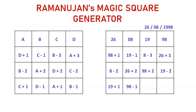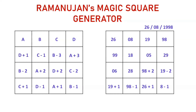Do all the calculations and write the values: 98 plus 1 is 99, 19 minus 1 is 18, 8 minus 3 is 5, 26 plus 3 is 29, and the remaining values are 6, 28, 100, 17, 20, 97, 27, and 7.